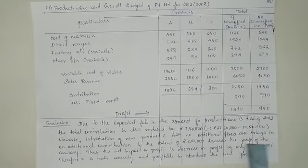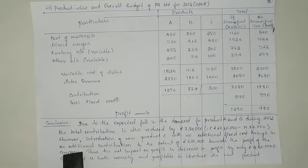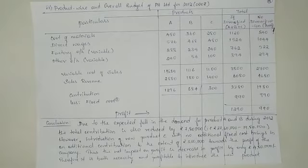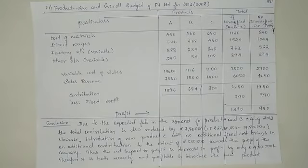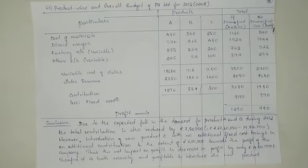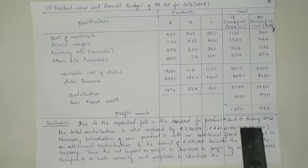However, the introduction of the new product with no additional fixed cost brings in additional contribution. Even though we are losing contribution of 7,80,000 due to demand decline, by introducing a new product we can gain further contribution of up to three lakh towards the company's profit. Thus, it is very profitable and necessary for the company to introduce the new product.